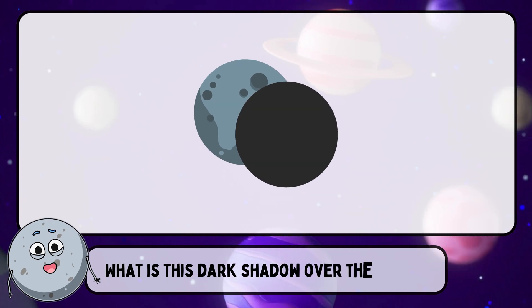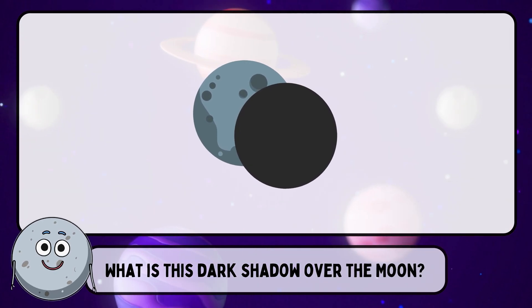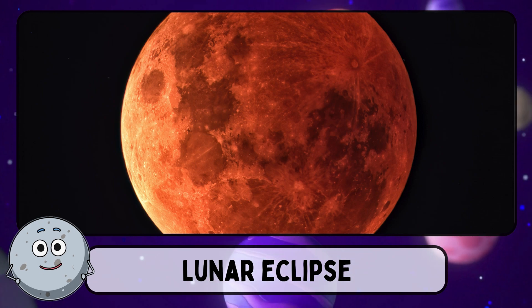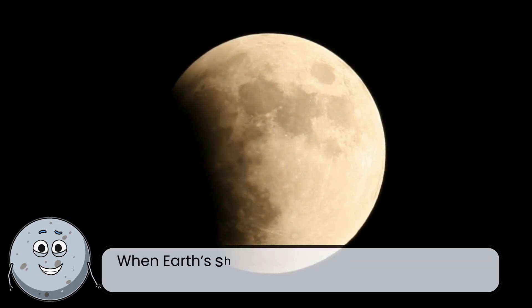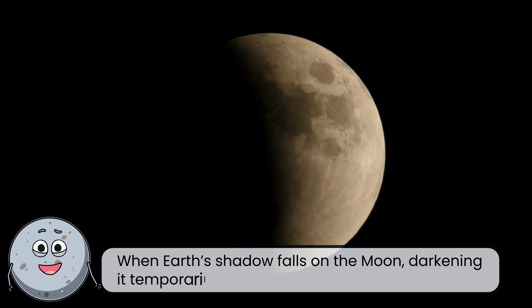What is this dark shadow over the moon? This is a lunar eclipse. When Earth's shadow falls on the moon, darkening it temporarily.